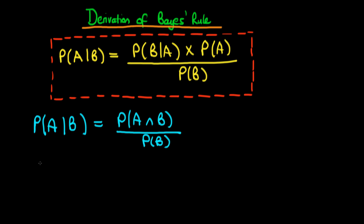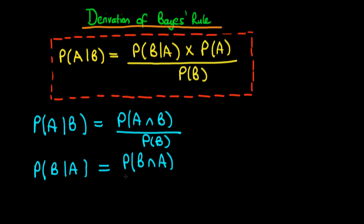We also know that we could write the reverse of this. We could work out the probability of B given A occurring, which isn't necessarily the same as the expression above. And we know that this is the same thing as the probability of B intersection with A — so B and A occurring — divided through by the probability of A occurring.